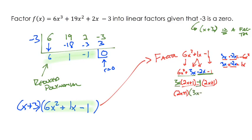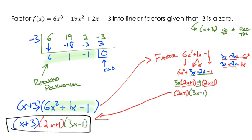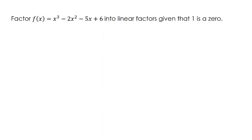We now have the common binomial factor 2x plus 1, which we factor out to the front, leaving 3x minus 1. So the quadratic 6x squared plus x minus 1 factors as (2x plus 1)(3x minus 1). Combined with our known factor of x plus 3, the original polynomial is fully factored as three linear factors: (x plus 3)(2x plus 1)(3x minus 1).